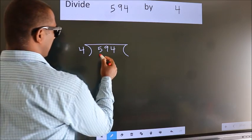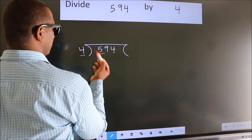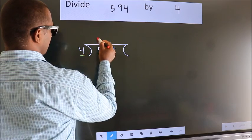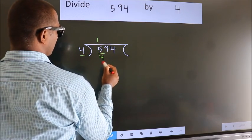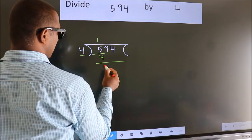Here we have 5, here 4. A number close to 5 in the 4 table is 4, once 4. Now we should subtract, we get 1.